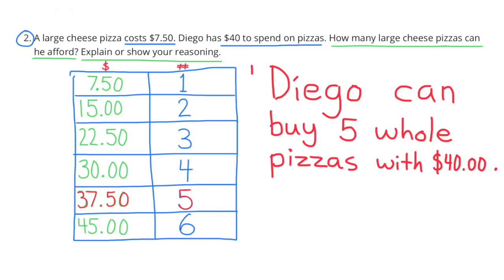Problem 2: A large cheese pizza costs $7.50. Diego has $40 to spend on pizzas. How many large cheese pizzas can he afford? Explain or show your reasoning.